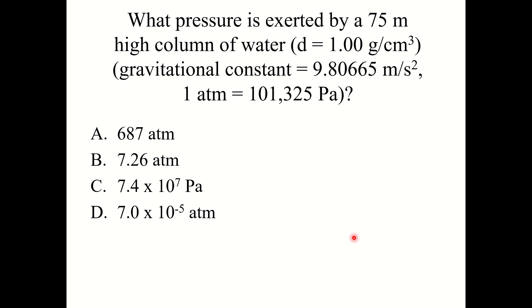Let's try a knowledge check question: What pressure is exerted by a 75-meter high column of water? The density of water is 1.00 grams per centimeter cubed, and use 9.8 meters per second squared for the gravitational constant. Note that some answer choices are in atmospheres and some in pascals, so you may need to convert. The correct answer is B — 7.26 atmospheres.